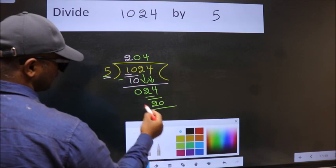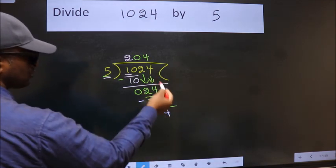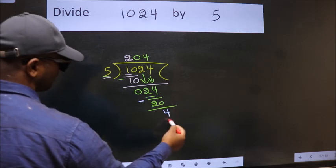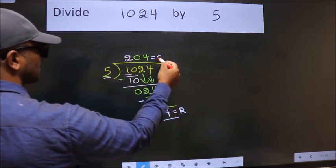Now we subtract. We get 4. No more numbers to bring it down. So we stop here. This is our remainder, and this is our quotient.